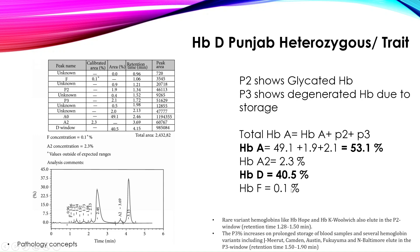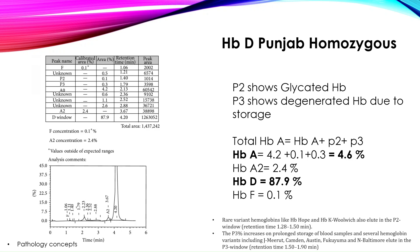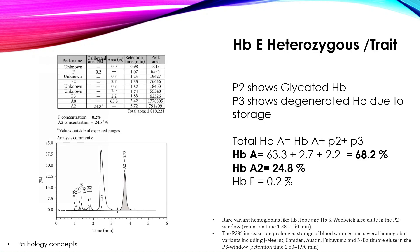Now let's see HbD Punjab homozygous. Here HbA is very low at 4.6%, HbA2 is 2.4%, and the majority of hemoglobin is HbD Punjab at 87.9%. In homozygous disease, hemoglobin D is the major hemoglobin, consisting of more than 80% of total hemoglobin.